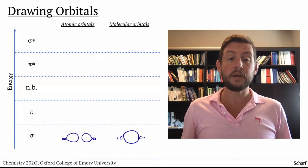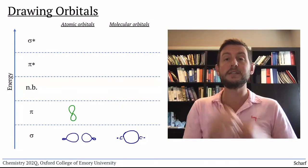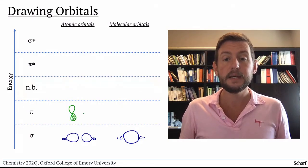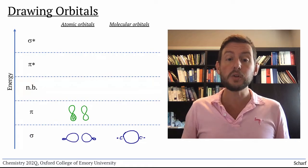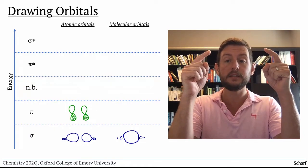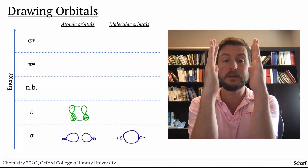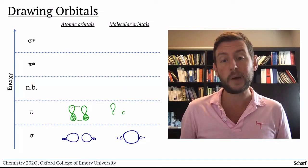Pi-bonding orbitals arise from the side-to-side overlap of adjacent p-orbitals. Each of the p-orbitals has two lobes, one above the plane of the other atoms around it, the other below. They overlap in phase to create a pi-bond, which we can draw a couple of different ways.